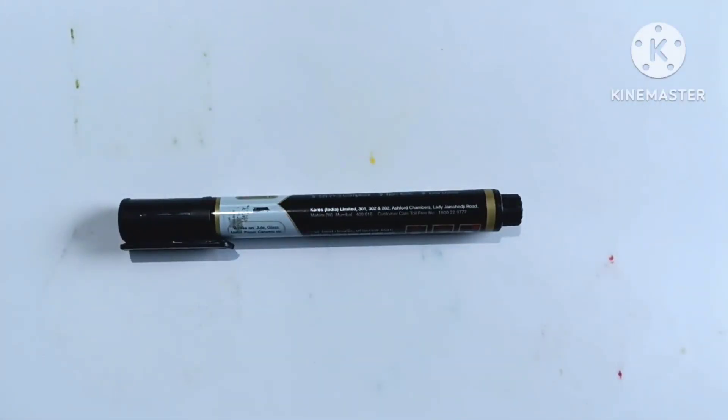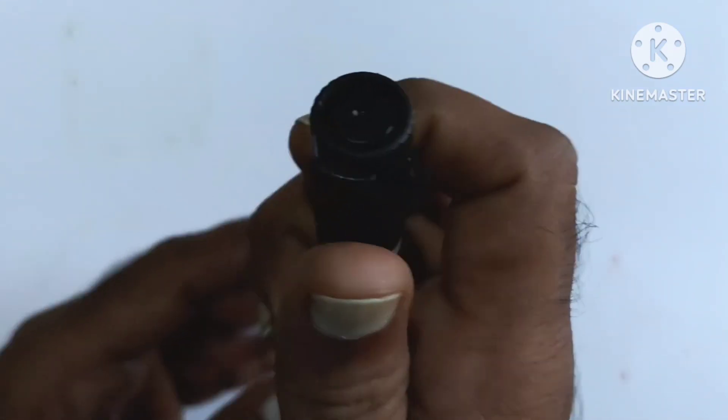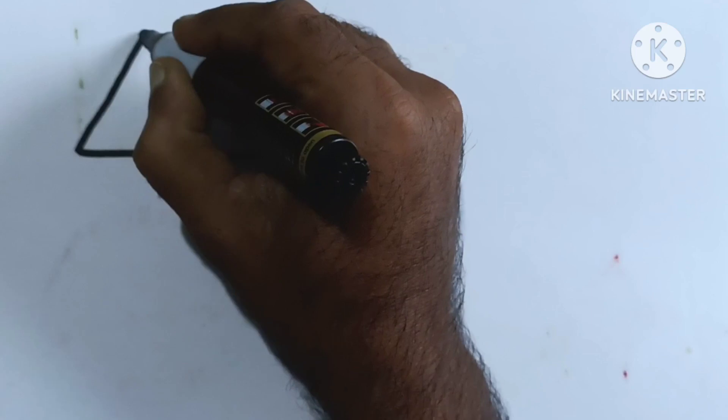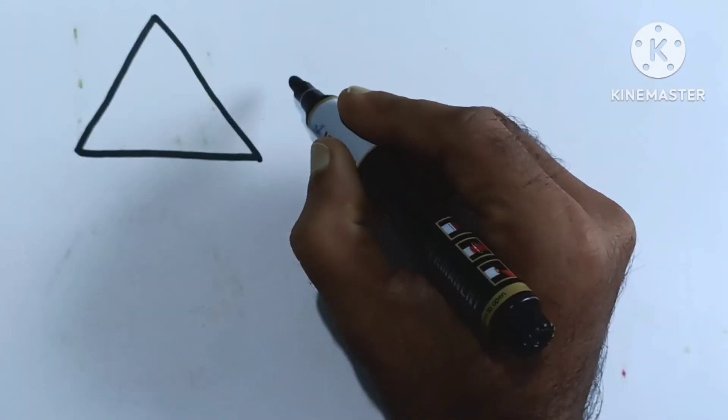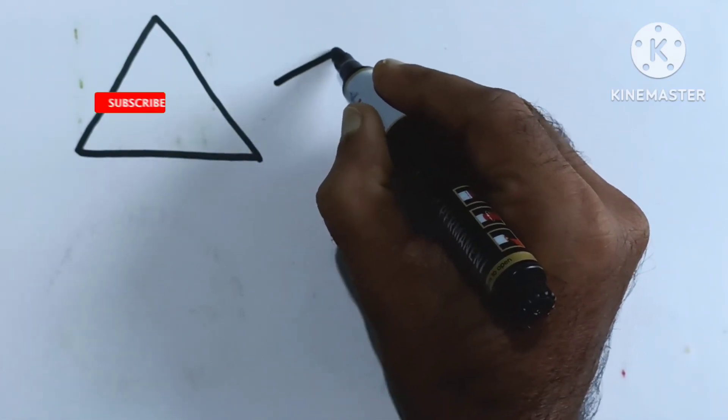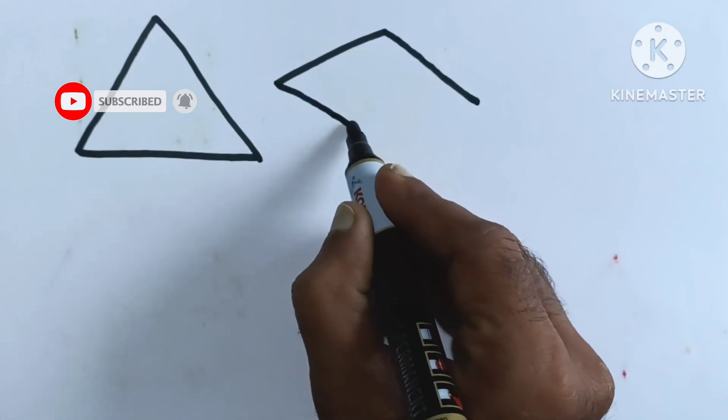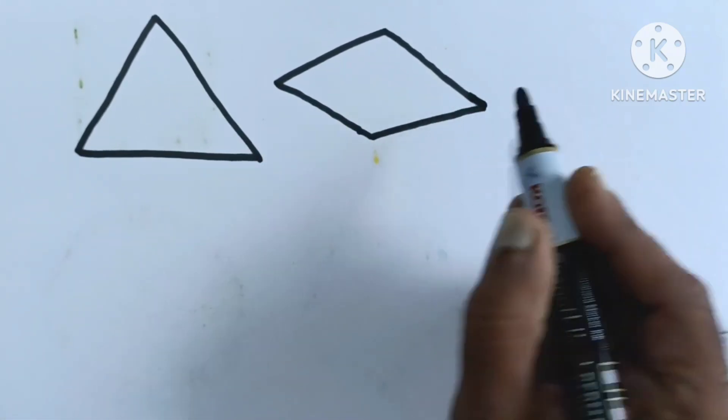Hello kids, let's draw some 2D shapes. Black color, it's a dark black color. Let's start. Triangle, triangle, diamond, diamond.